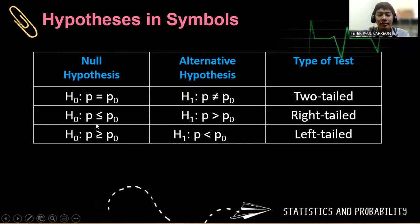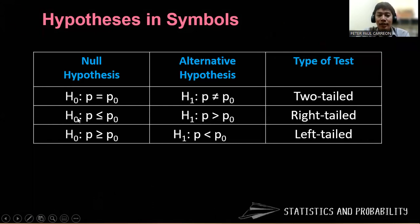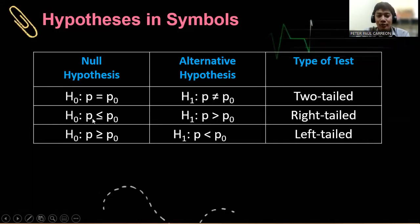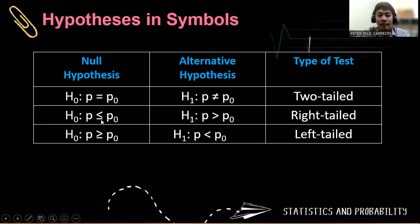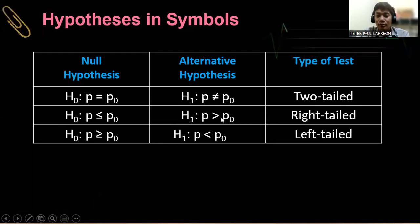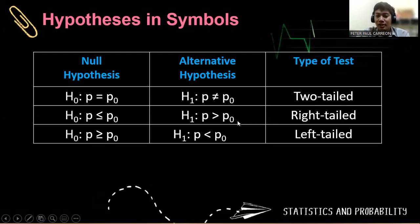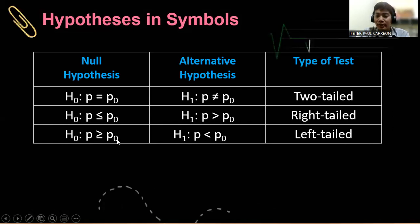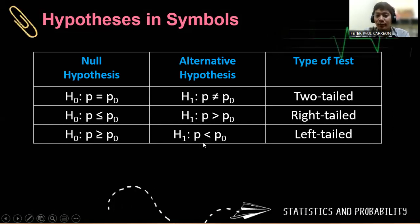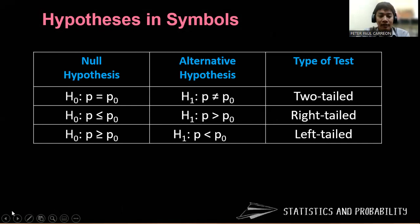For a one-tailed test, which is right-tailed, we have H sub 0 in which P is less than or equal to P sub 0, but in the alternative hypothesis, which gives the right-tailed distribution, we have P is greater than P sub 0. For the null hypothesis P is greater than or equal to P sub 0, our alternative hypothesis is P is less than P sub 0 — that is a left-tailed test.